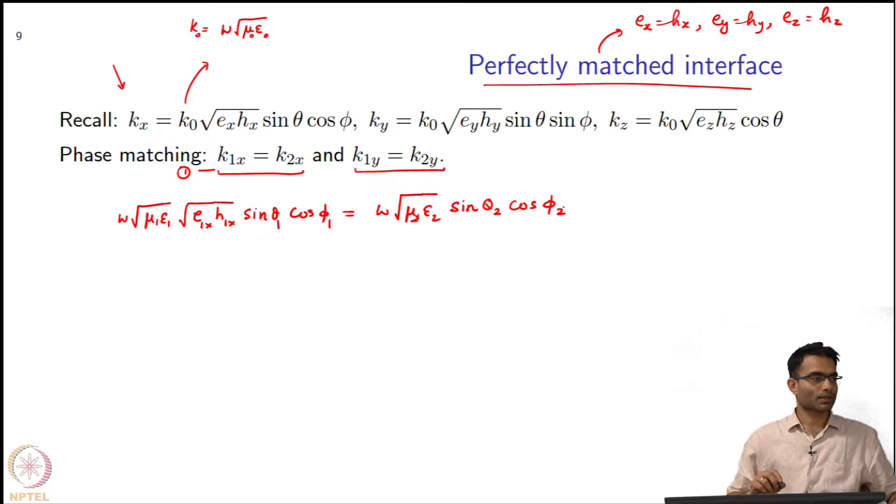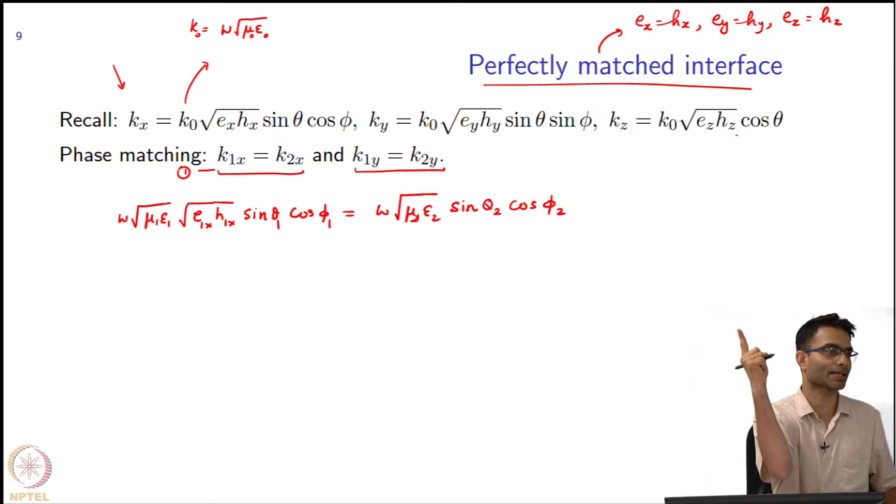So what are these thetas and phis over here? Do they correspond to any physical angle? They could, right. I mean, just take the simple case e_h is equal to 1 everywhere - that is your free space. So k_z is k naught cos theta. So if I have a wave vector making an angle theta with the z axis, giving me the z component of the wave vector.